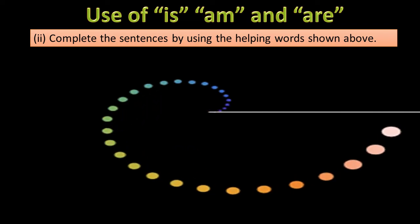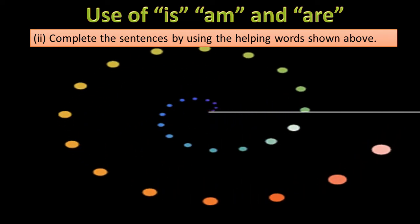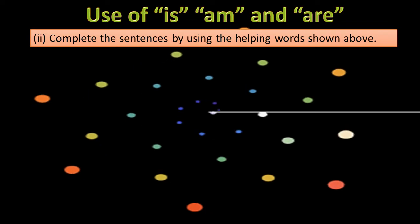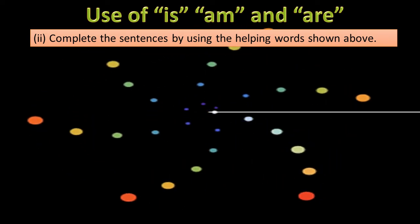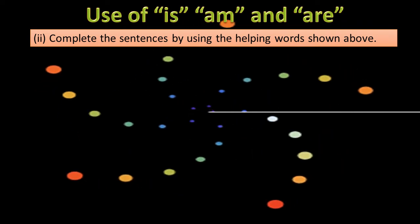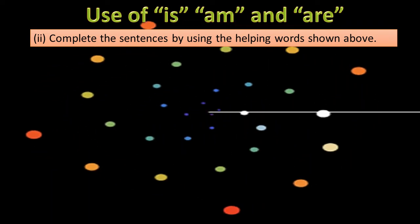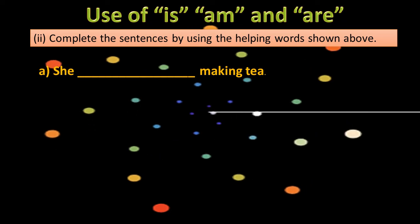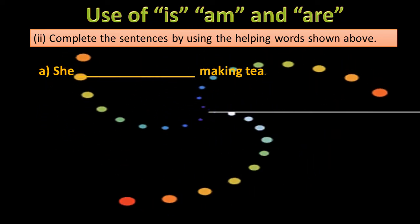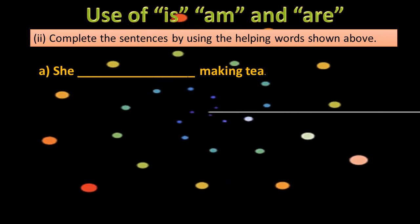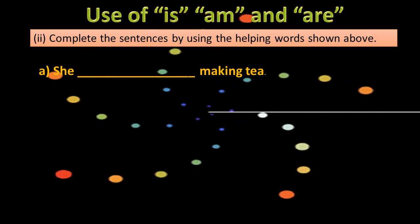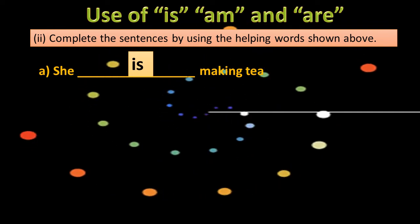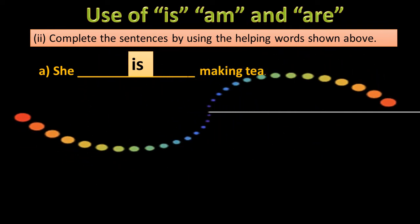Use of is, am, and are — complete the sentences by using the helping words shown above. Jaise ke hamare pas teen helping words maujood hain: is, am, and are. Humen in ka istemal karte hue sentences ko fill karna hai. The first sentence: She dash making tea. Aap ko to pata hai na ke jab 'she' aata hai to us ke saath kya aata hai? Yahan pe ek person ke bare mein baat ho rahi hai. Yahan 'is' aaye ga — She is making tea.